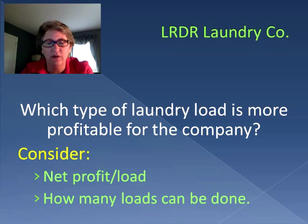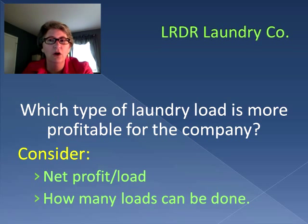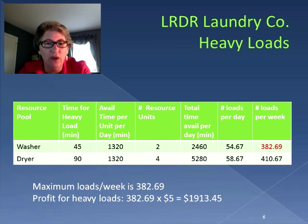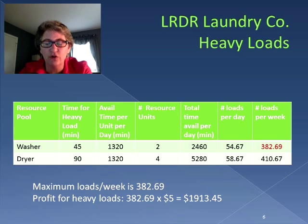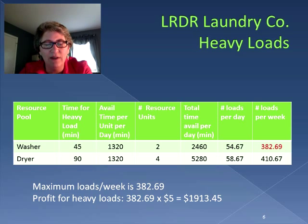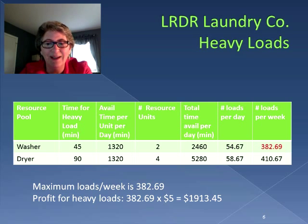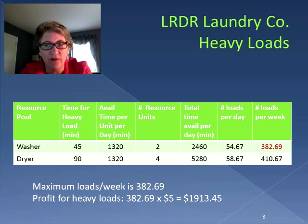Let's look at each type of load individually. For heavy loads, based on capacity, the total number of loads per week is only 382.69. Instead of the dryer being the bottleneck, the washer is actually the bottleneck. Taking the total number of loads and multiplying by the $5.00 net profit per load, if we only did heavy loads, we could earn $1,913.45 in a week.